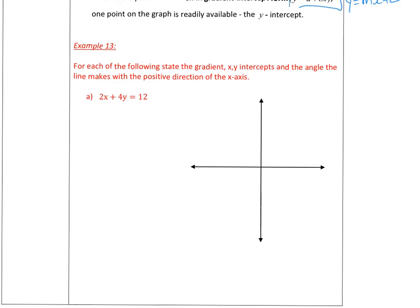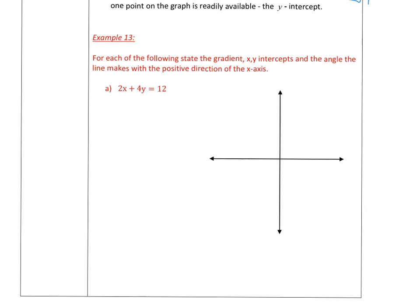So I'm just going to make this a bit bigger so you can see. All right. So for the following, state the gradient, the x and y intercept, and the angle it makes with the positive direction of the x-axis. And I think they didn't write sketch it, but hopefully we can sketch it as well. So let's go. So first of all, we want to state the gradient. So finding the gradient, you want to rearrange it to look like this, don't you? So I've got 2x plus 4y equals 12. I'm trying to get 1y by itself. So I'm going to move that x over, which would, the 2x, sorry, which would become what? Minus 2x.